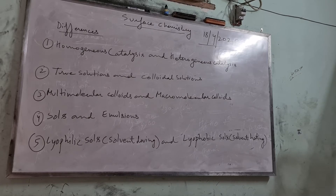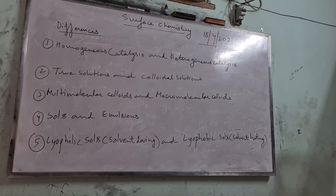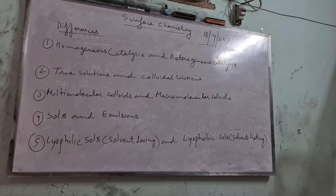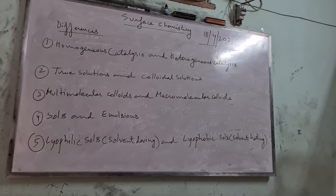In homogeneous catalysis, the catalyst enters into chemical combination with one of the reactants to form an intermediate compound, which then gives products and the catalyst is regenerated — so intermediates are formed. In heterogeneous catalysis, catalysts are usually solids that provide a surface for the reaction to take place; no intermediates are formed. The key difference: in homogeneous catalysis reactant and catalyst are in the same phase; in heterogeneous catalysis they are in different phases.